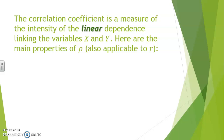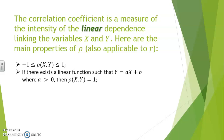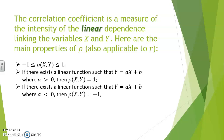The correlation coefficient is a measure of the intensity of a linear dependence or linear relationship connecting variables x and y. A coefficient of correlation always takes values between −1 and 1 inclusively. If there exists a linear function y = ax + b with slope a > 0, then the correlation coefficient will be 1. If there exists a linear function y = ax + b with slope a < 0, then the correlation coefficient will be −1.